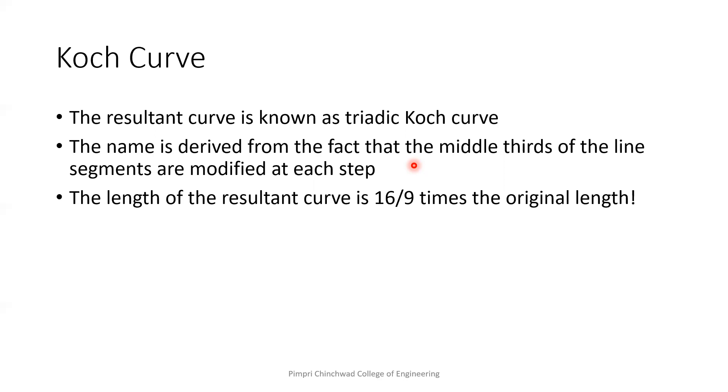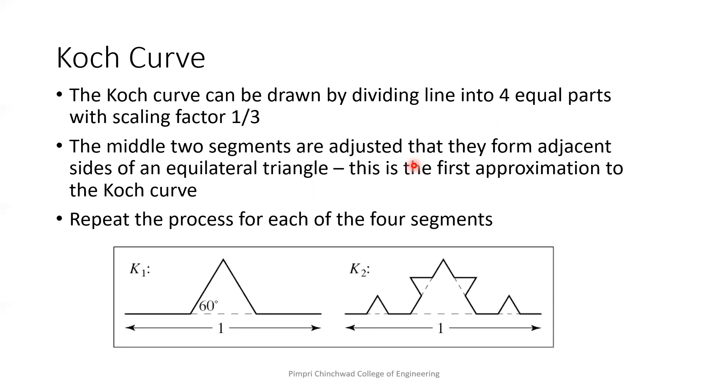The length of the resultant curve is four by three times of the original length. So suppose this length is one and I am dividing it into three different parts. So the length of each part is one third. Now I am replacing this part with two segments, two straight lines, each having the length of one third. So the total length is four by three, four into one third. So four by three.